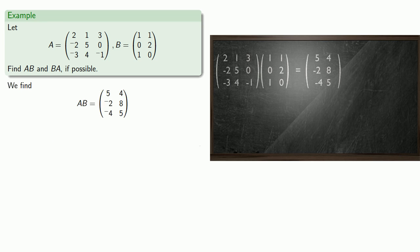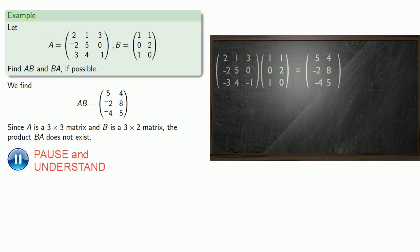Since A is a 3 by 3 matrix and B is a 3 by 2 matrix, the product BA does not exist.